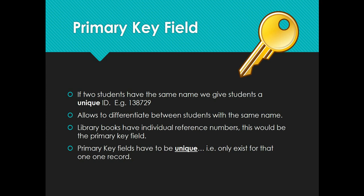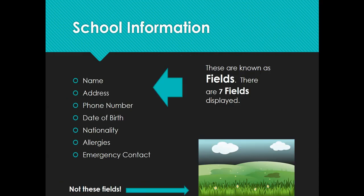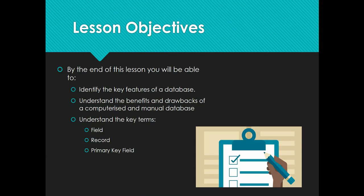It's the same with library books — each library book has a series of numbers unique to that book. When you type it into a computer, you can see how many people have rented it, who last rented it, and its location in the library. When you have a membership or join a club, there'll be a membership ID or reference number — these give you a unique record to identify who it is. That's an introduction to databases. You should be clear on what a manual database is, what a computerized database is, and the key terms: fields, records, and primary key fields being unique. Thank you.